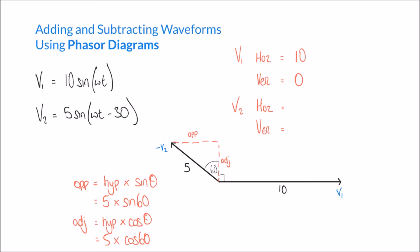Make sure your calculator is set to degrees rather than radians. One important point: the opposite side represents the horizontal component and the adjacent represents the vertical component. Because the opposite side takes us to the left — the opposite direction to v1 — we have to regard this as a negative number, so the horizontal component is minus 4.33. Anything pointing left or downwards is negative. Because the adjacent (vertical component) points upwards, it is positive, so that is positive 2.5.